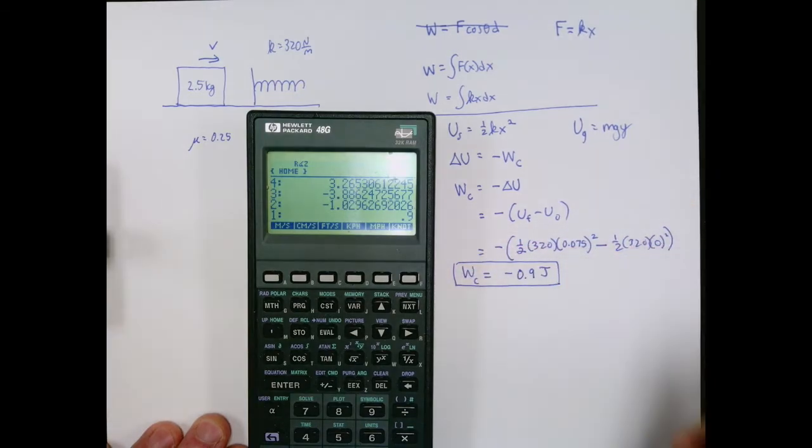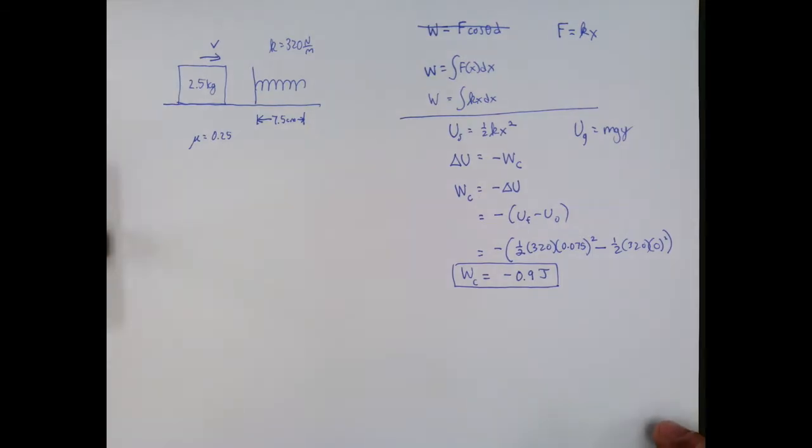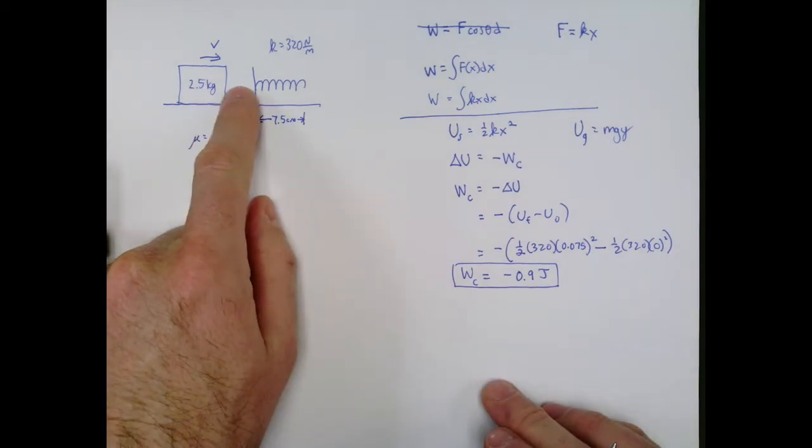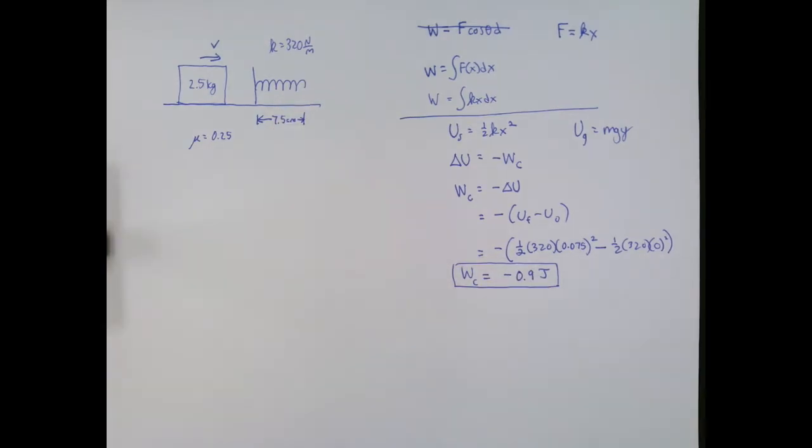And you can take a moment and think about why is it negative. When something does negative work, it takes kinetic energy away from an object. And that's exactly what would happen here, that as this block hits the spring, the spring is going to take kinetic energy away from the block. So I am not surprised that we get a negative answer there.